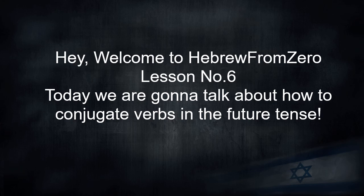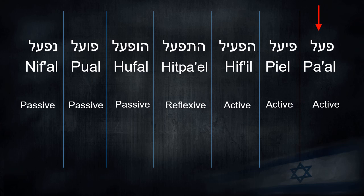Hey, welcome to Hebrew from Zero, lesson number six. Today we're going to talk about how to conjugate verbs in the future tense. Just a quick reminder, we're only focusing on the building Pa'al. That's because that's the most useful and most common building. Later, we'll learn the other buildings.